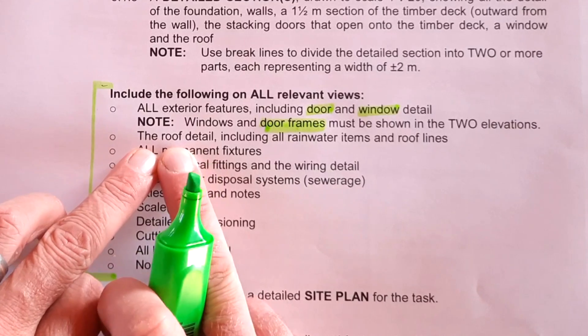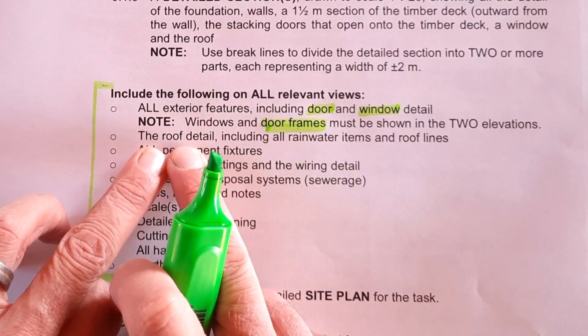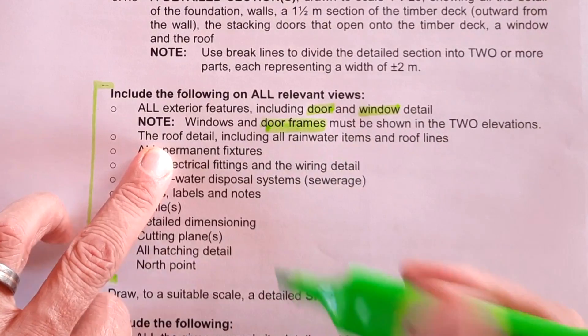And then of course, there's going to be two elevations. We'll look at that later. The roof detail. So in your floor plan, that is the actual roof line. That must be indicated.